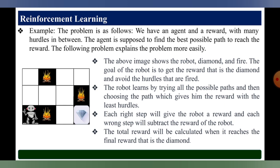Each wrong step will subtract the reward of the robot — if you do the correct steps you will get the reward, if you do the wrong way you will pay the penalty. The total reward is calculated when the robot reaches the final destination.